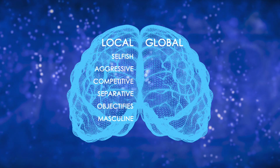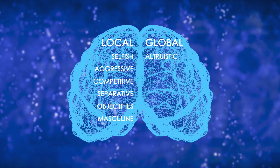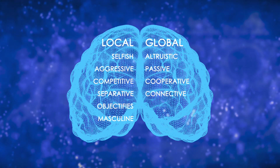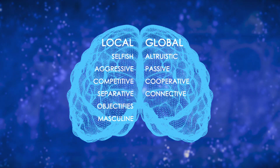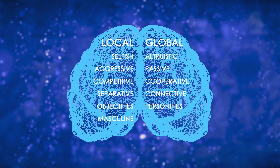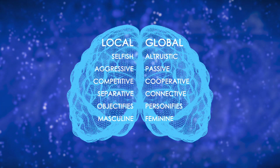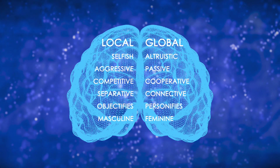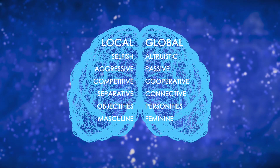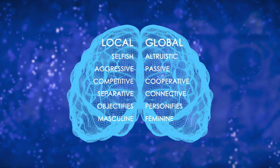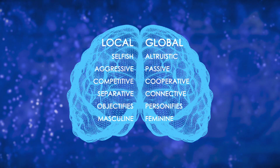A global viewpoint promotes altruistic behaviors. It causes us to be passive, cooperative, and connective. The brain's global system personifies people and things. Global systems give us feminine gender. Now, no doubt, you know many men and women who don't fit this description, especially women. But that's because the dominant pattern is often altered by other genetic factors, cultural influences, and personal choices.